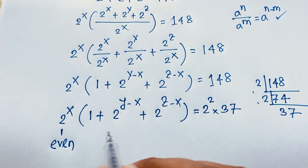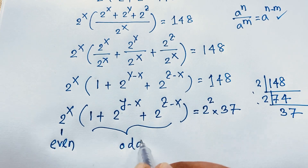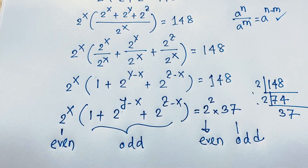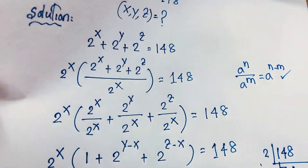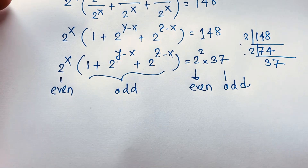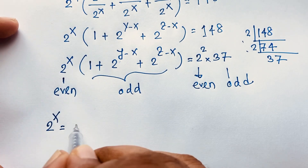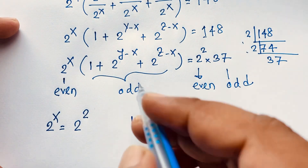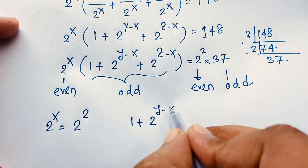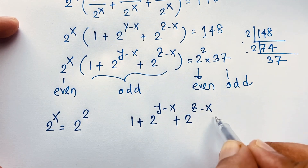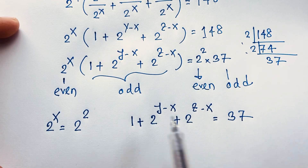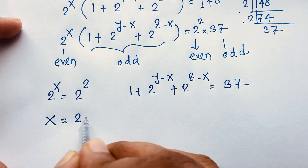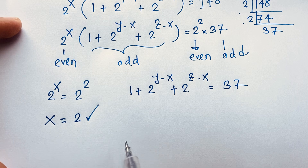You can see that 2 to the power x is an even number, 37 is odd, the quantity in brackets is even, and 37 is also odd. Comparing both sides, 2 to the power x equals 2 to the power 2, and 1 plus 2 to the power y minus x plus 2 to the power z minus x equals 37. Since the bases are the same, x is equal to 2.